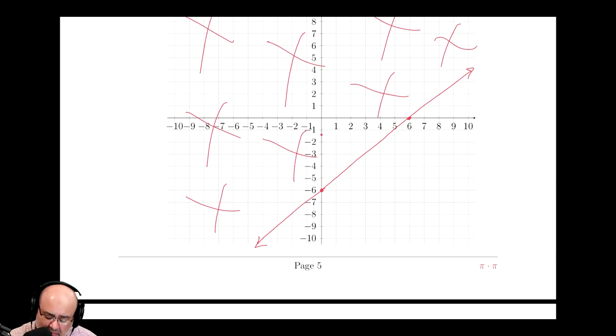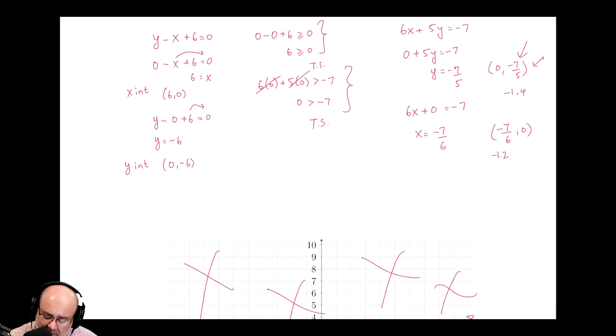And then the other intercept is negative 1.2 comma 0, or negative 7 over 6 comma 0. It's about negative 1.2.